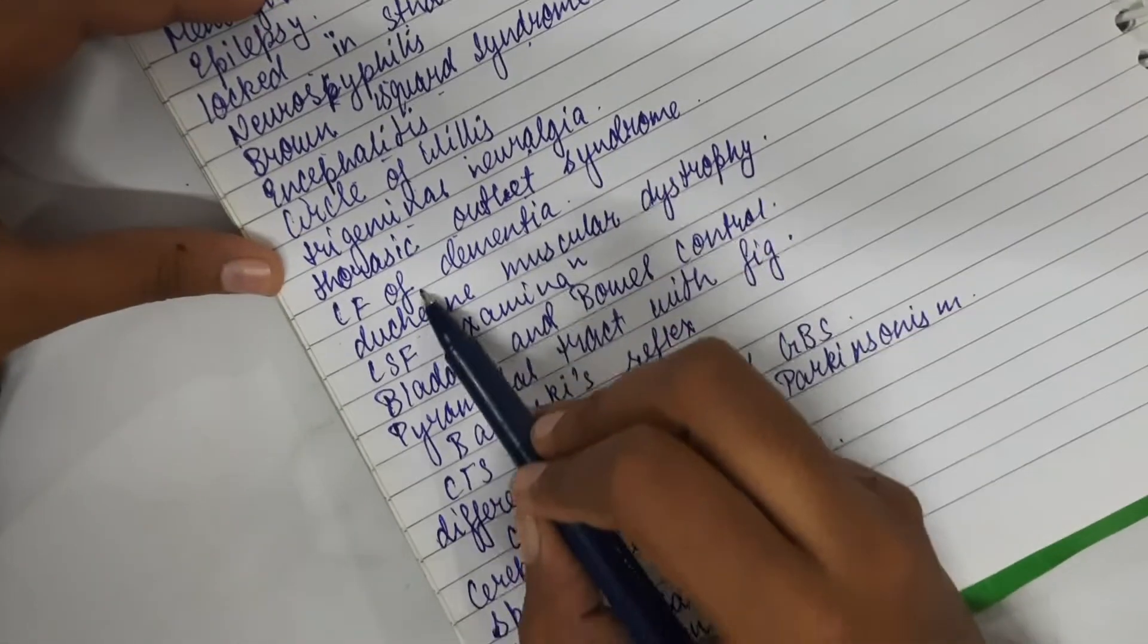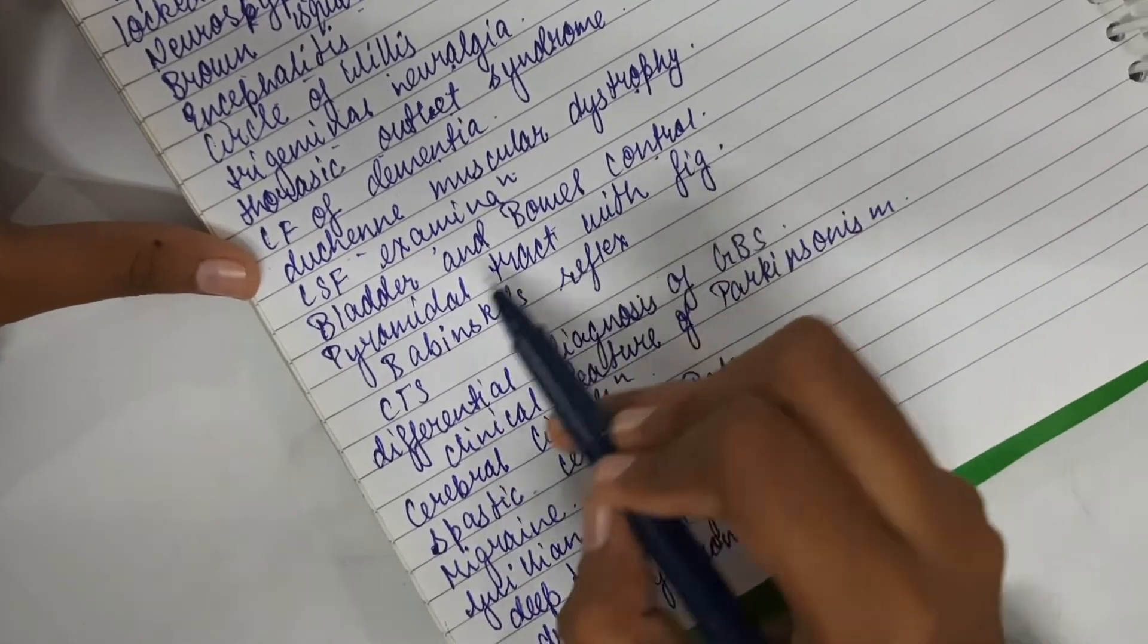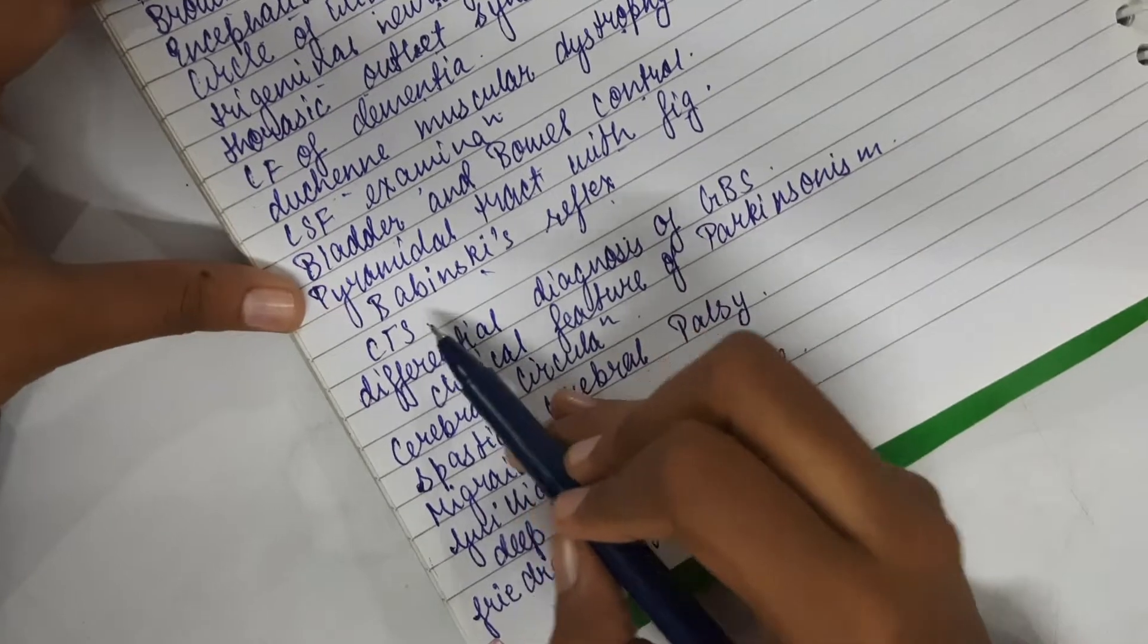Circle of Willis, trigeminal neuralgia, thoracic outlet syndrome, clinical features of dementia, Duchenne muscular dystrophy, CSF examination, bladder and bowel control, pyramidal tract with figure.